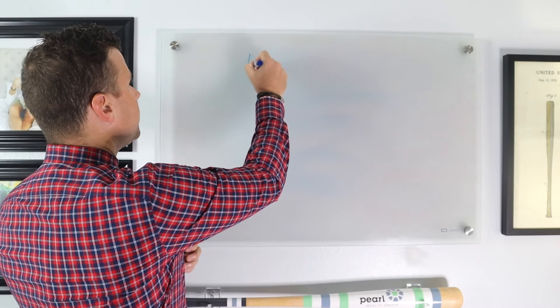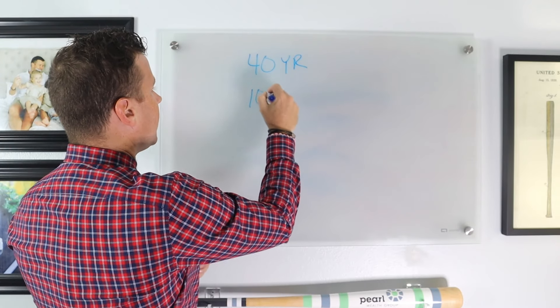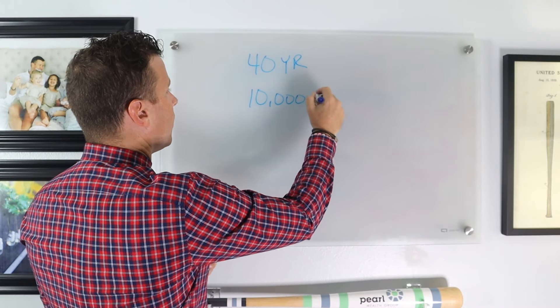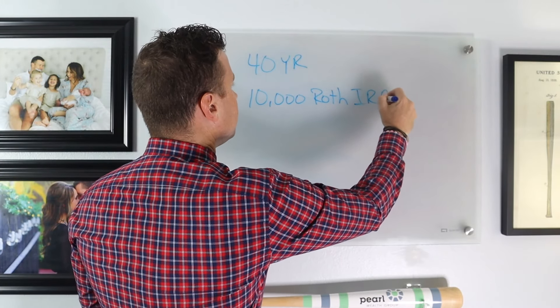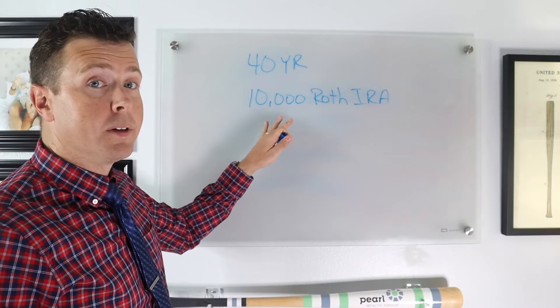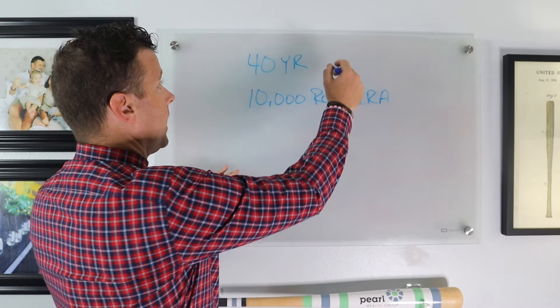Let me give you an easy example. Let's say we have a 40 year old investor and he wants to do a $10,000 Roth IRA conversion. So he's going to move $10,000 from his IRA to his Roth IRA. He's in the 20% tax bracket.